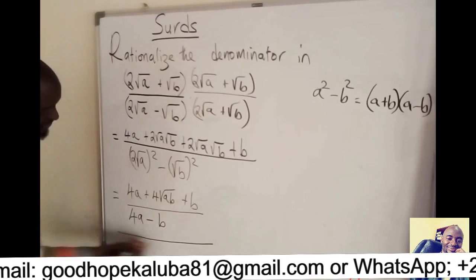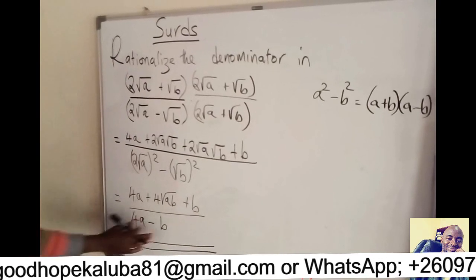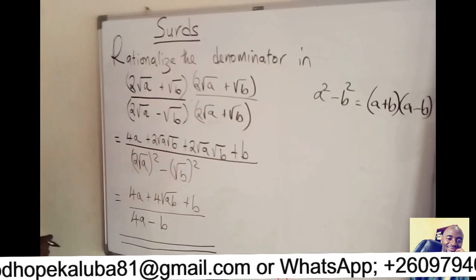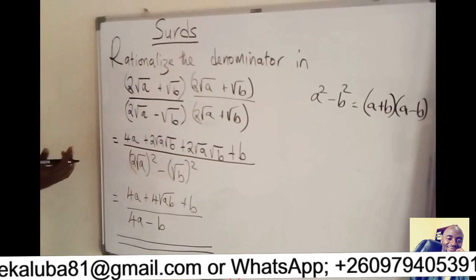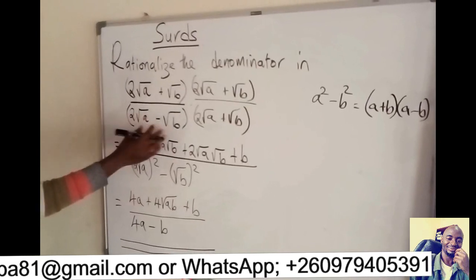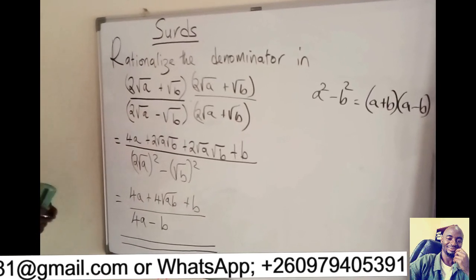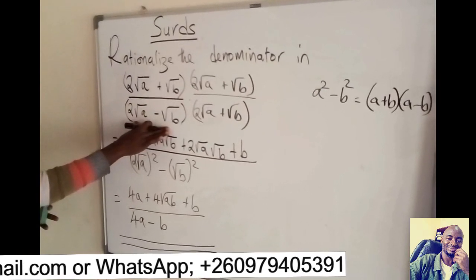So when you look at the denominator here, we don't have any radical, we don't have any surd. So it means we've rationalized the denominator. So when they tell you to rationalize the denominator, they are telling you to remove the square roots from the denominator. So you multiply with its conjugate.